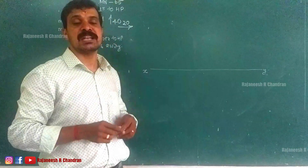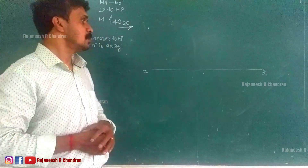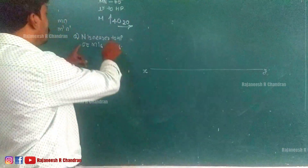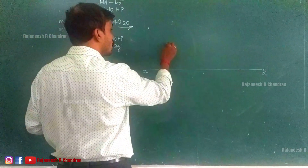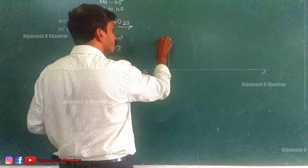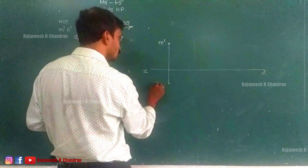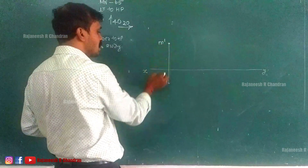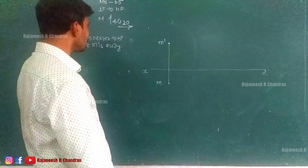We draw the XY line. We can locate point M completely because it is fully specified: M is 40 mm above HP, so M′ is 40 mm above the XY line in the front view, and M is 20 mm below the XY line in the top view. So M′ and M are both located. This distance is 40 and this distance is 20.